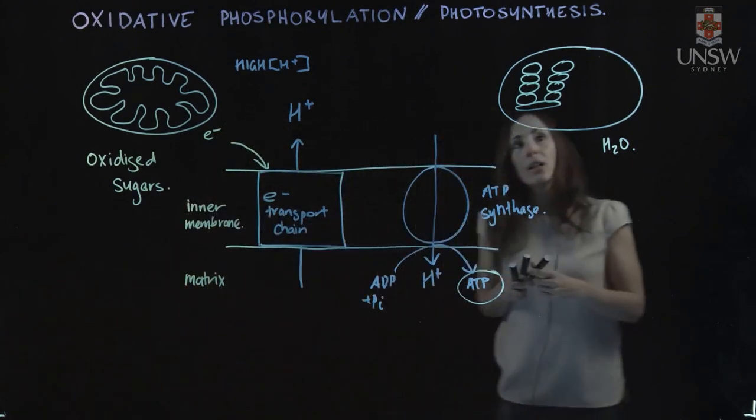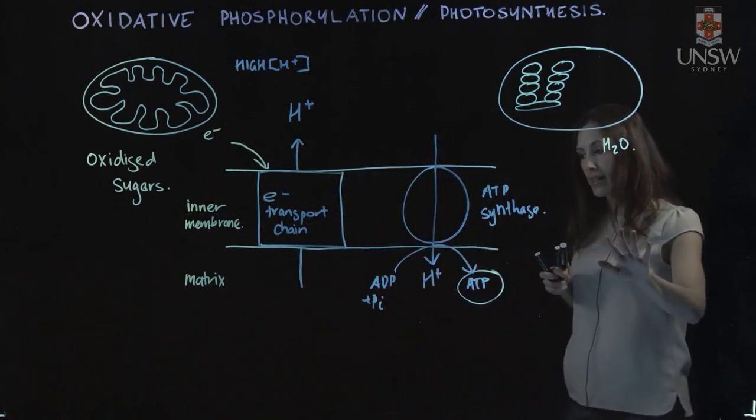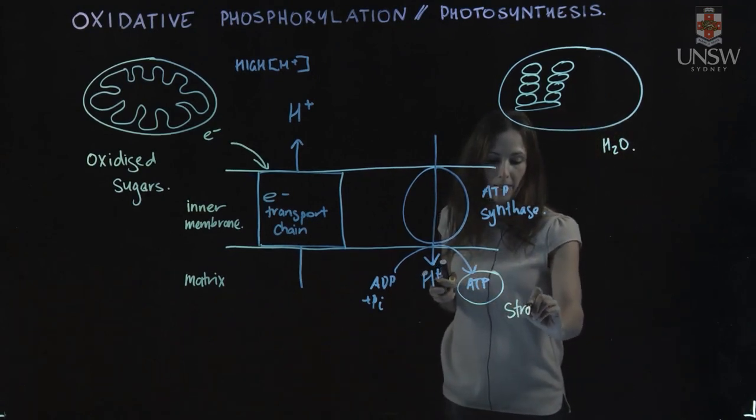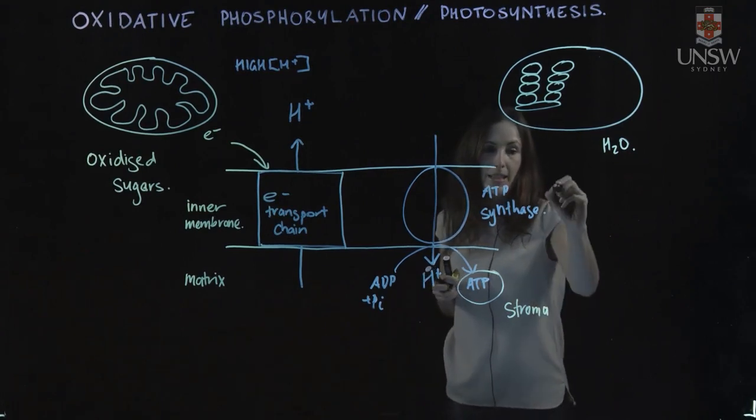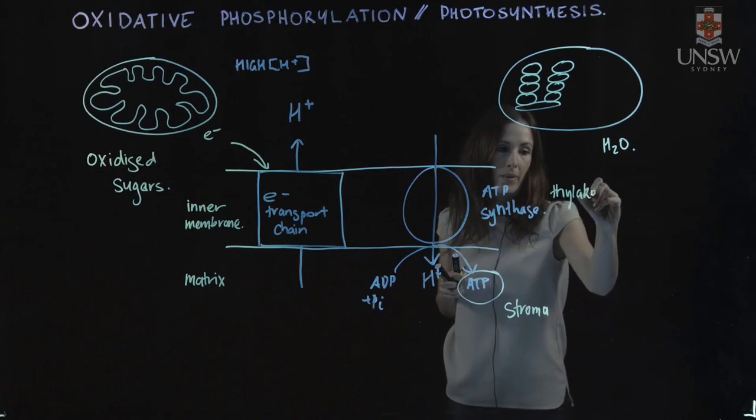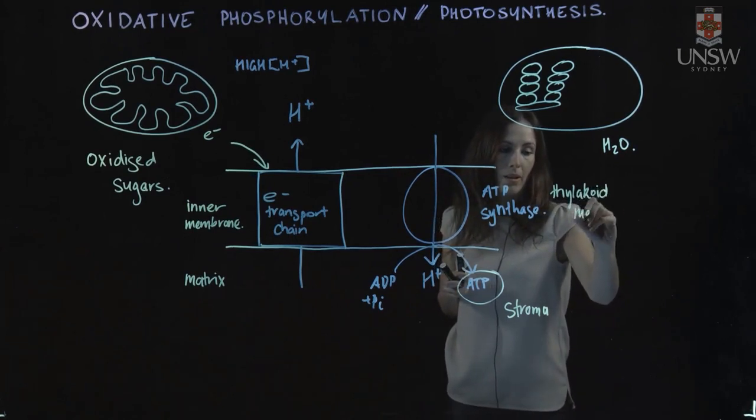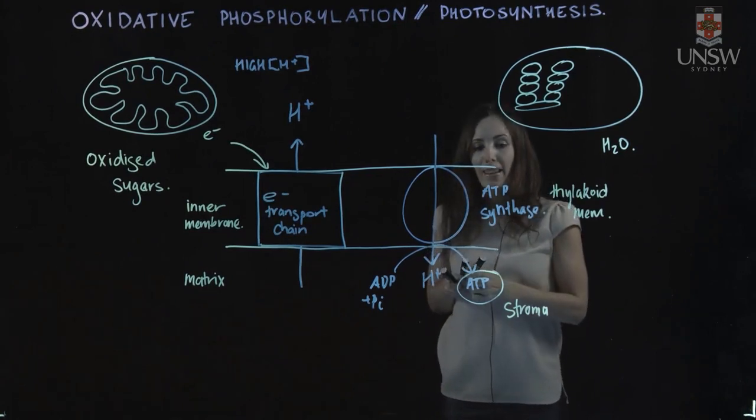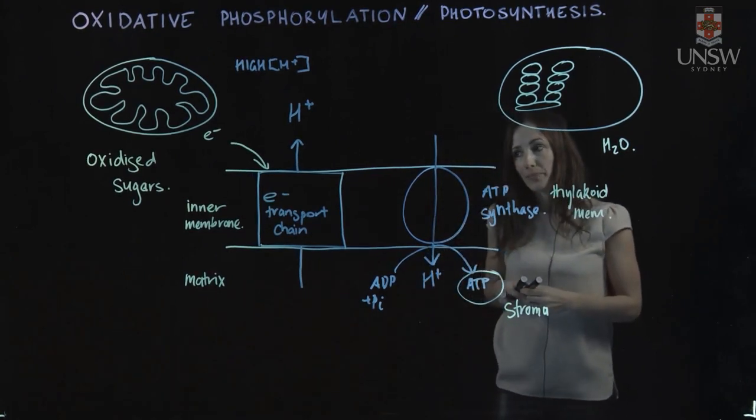In contrast, when we have photosynthesis, our ATP is being created in the stroma, and this is our thylakoid membrane, and our area of high proton concentration is in the thylakoid space.